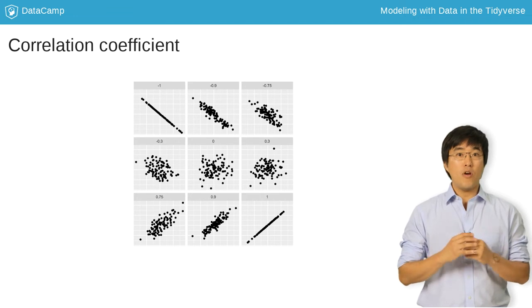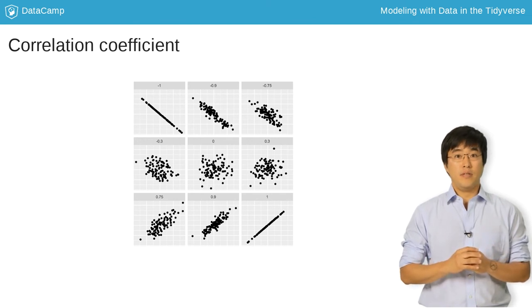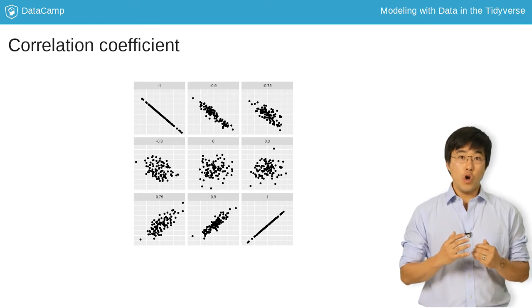In the bottom right plot, where the correlation is positive 1, the relationship is perfectly positive. In the middle, where the correlation is 0, there is no relationship.